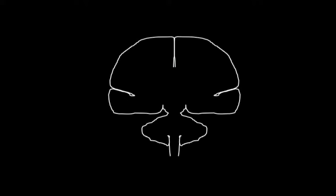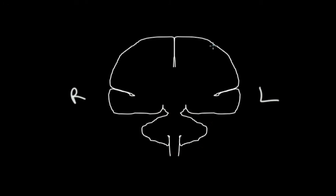There's a second localization for ataxia hemiparesis, and it has to do with the cerebellar output fibers. The corticospinal tract runs down through the posterior limb of the internal capsule through the brain stem, crosses in the medulla, and heads out to control the right side of the body.